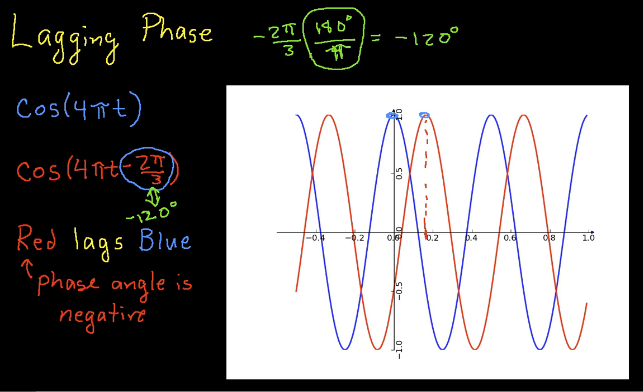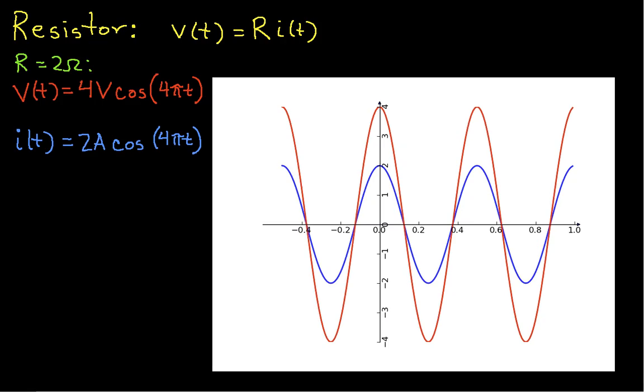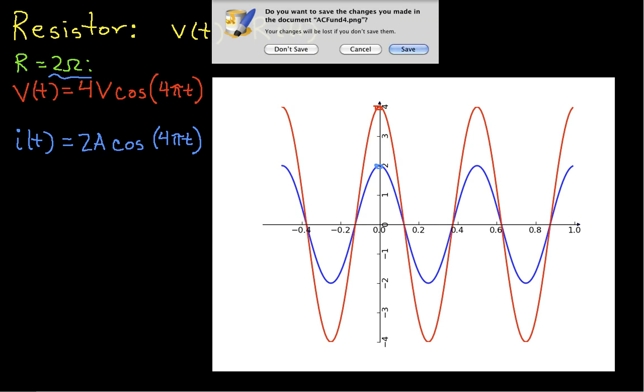Let's now look at the current-voltage relationships of different circuit components. First is a resistor. In this case, I've drawn the voltage in red and the current in blue. And if my resistance is 2 ohms, then the voltage is twice as large as the current. You'll notice that there's no phase change. Both the voltage and the current are in phase, which means that they have their peaks and their zero crossings at the same time. So resistors don't change phase, they change amplitude.